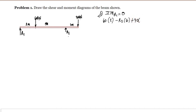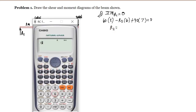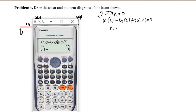Multiplying by the moment arm of 6 plus 1, which is 7 meters, set equal to zero. Computing for R2: 60 times 2 minus 6·R2 plus 30 times 7 equals zero. Solving, we get R2 equal to 55 kilonewtons.